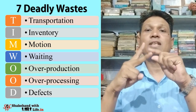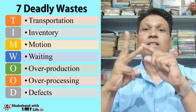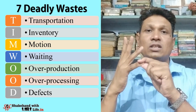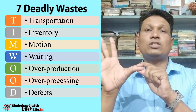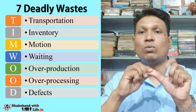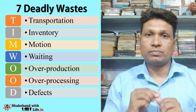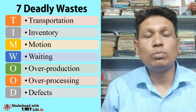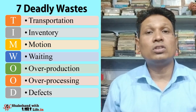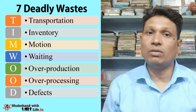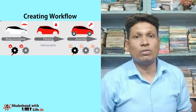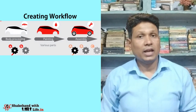The seven deadly wastes — TIMWOOD — are: the first is Transportation, the second is Inventory, the third is Motion, the fourth is Waiting, the fifth is Overproduction, the sixth is Over-processing, and the seventh is Defects. A separate video on these seven deadly wastes is available on the Shake Hand with Life YouTube channel.